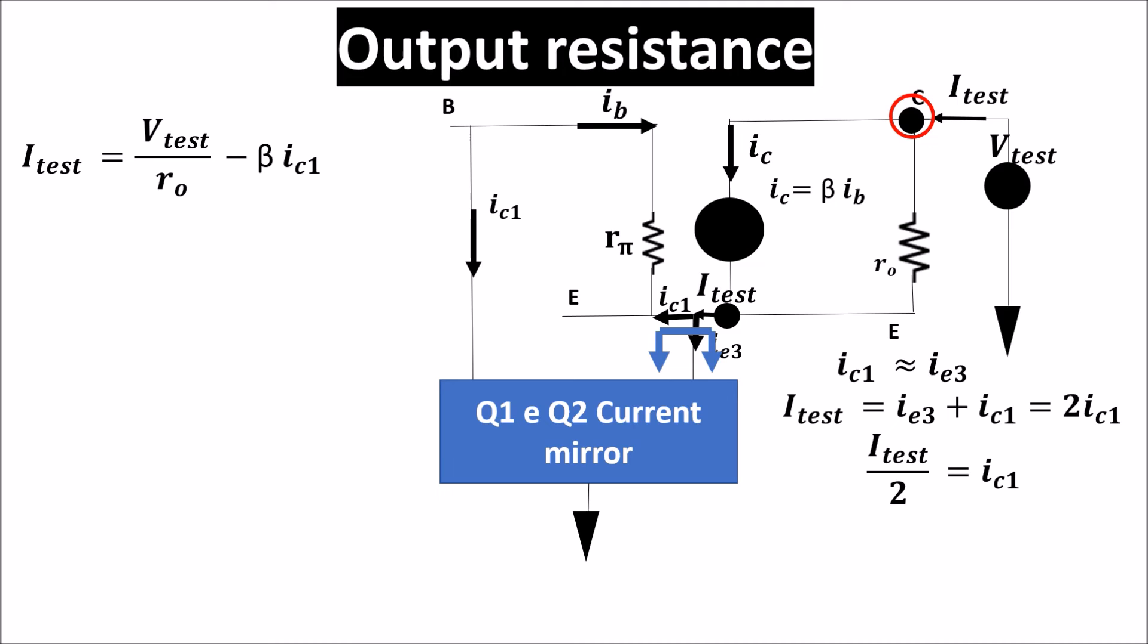Remembering that IC1 is ITest half, we can write this equation. Sorting things out, we get this equation.